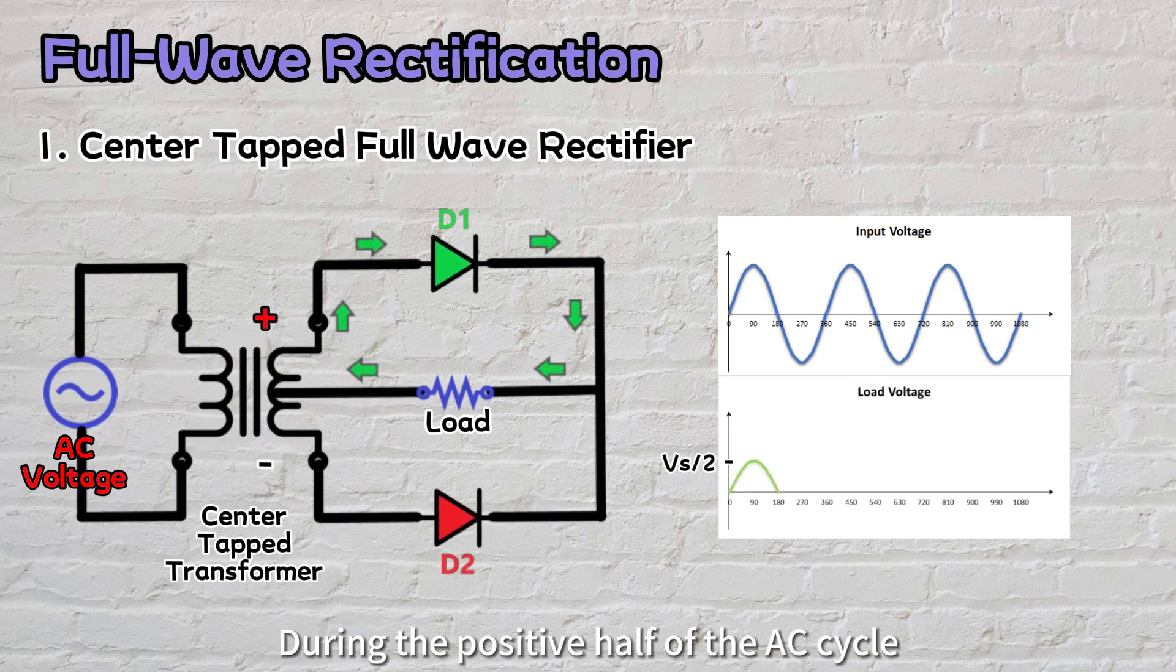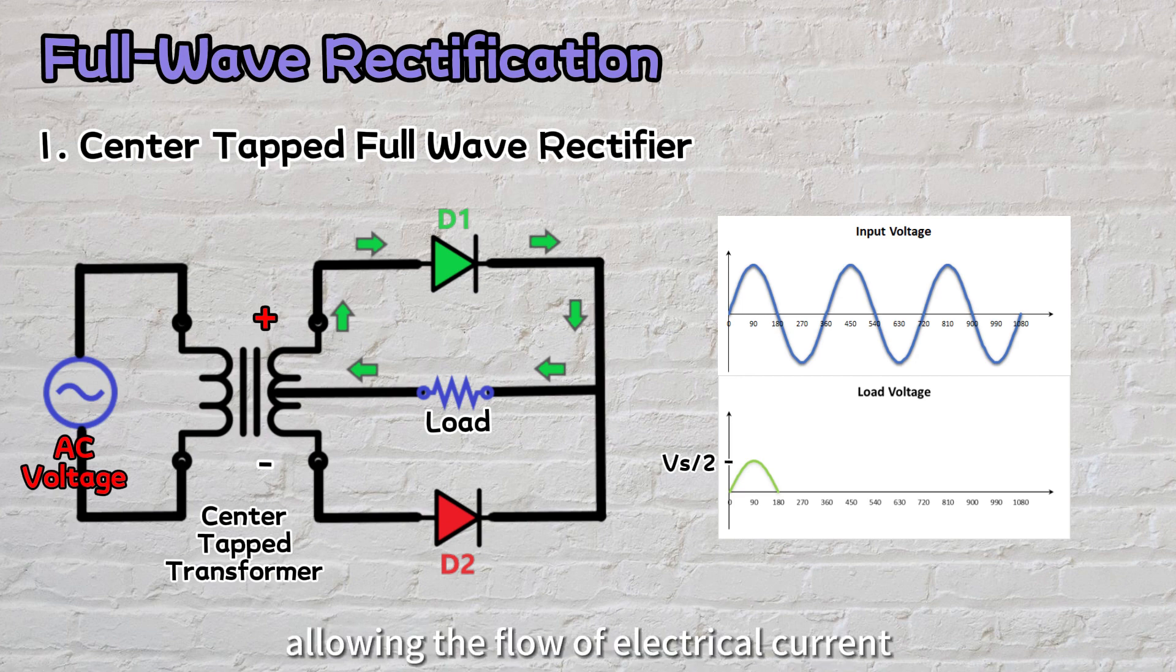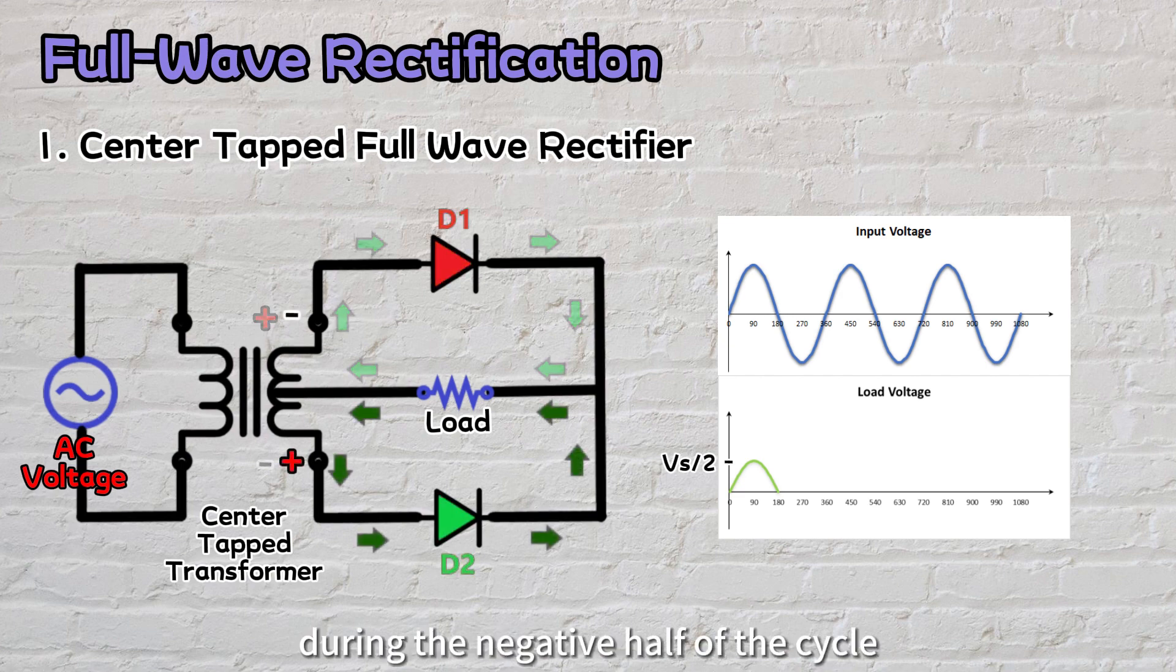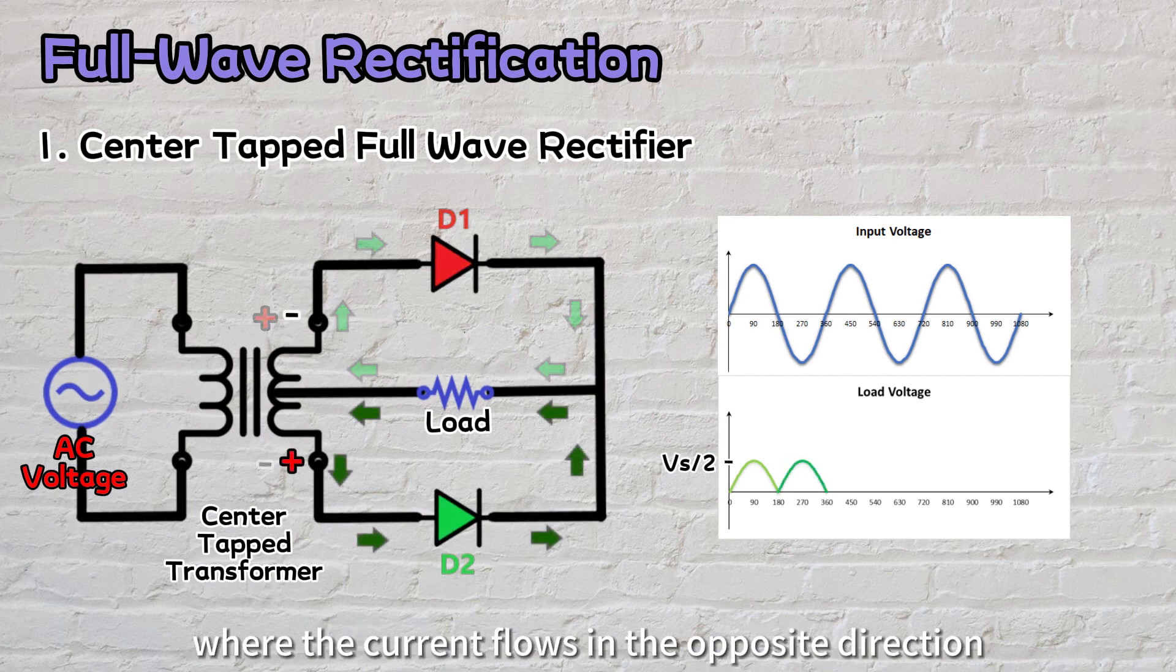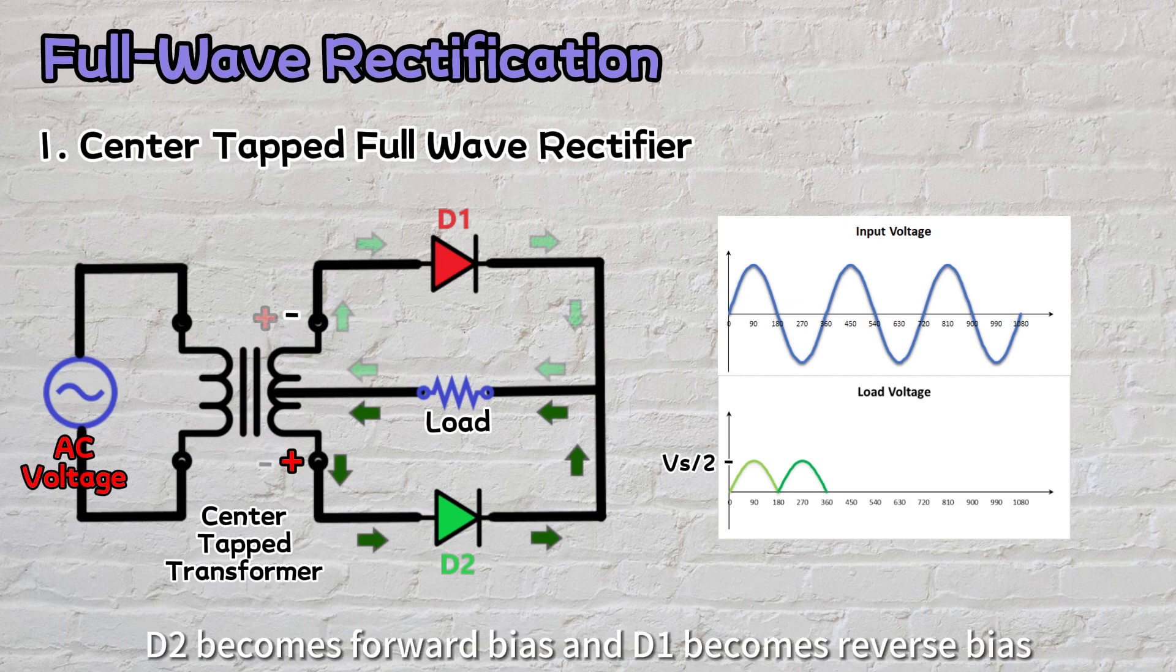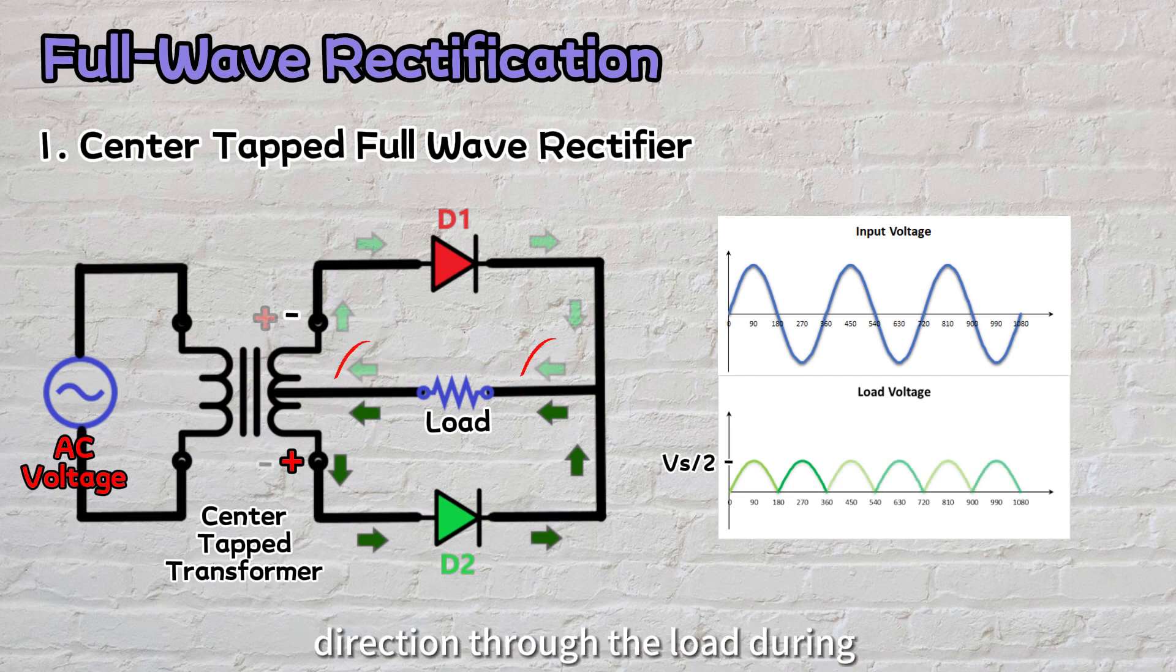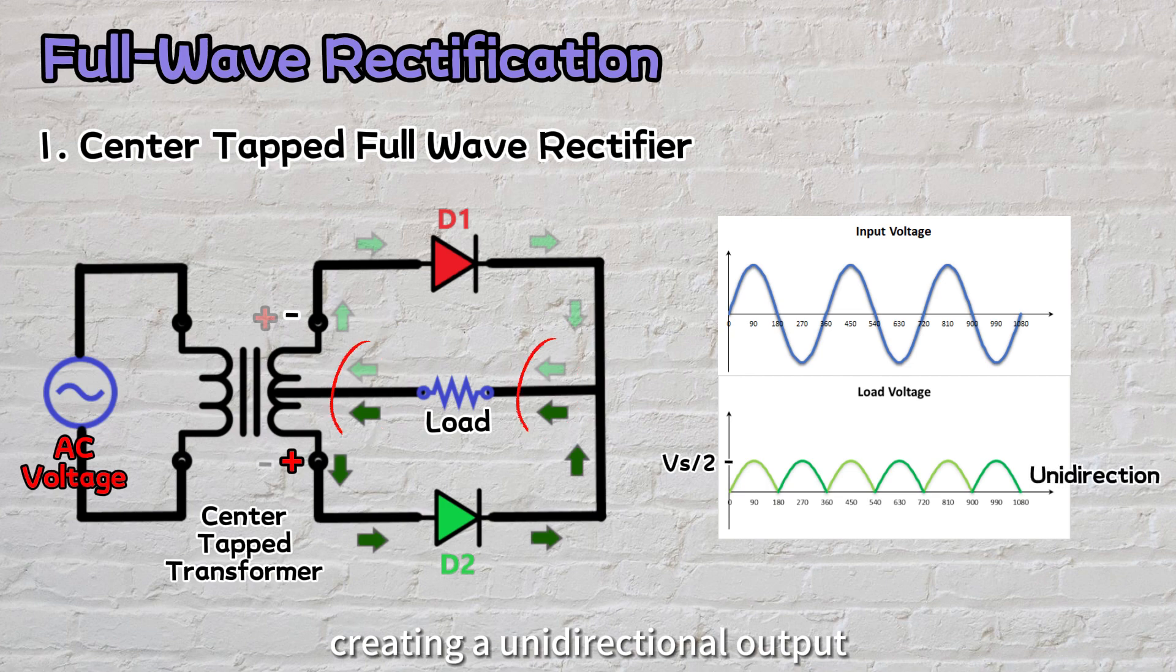During the positive half of the AC cycle, D1 in forward bias takes the lead, allowing the flow of electrical current while D2 in reverse bias acts as a barrier. In contrast, during the negative half of the cycle where the current flows in the opposite direction, D2 becomes forward bias and D1 becomes reverse bias. As a result, D2 permits the current flow while D1 restricts it. Notably, the current flows in the same direction through the load during both the positive and negative cycles, creating a unidirectional output.